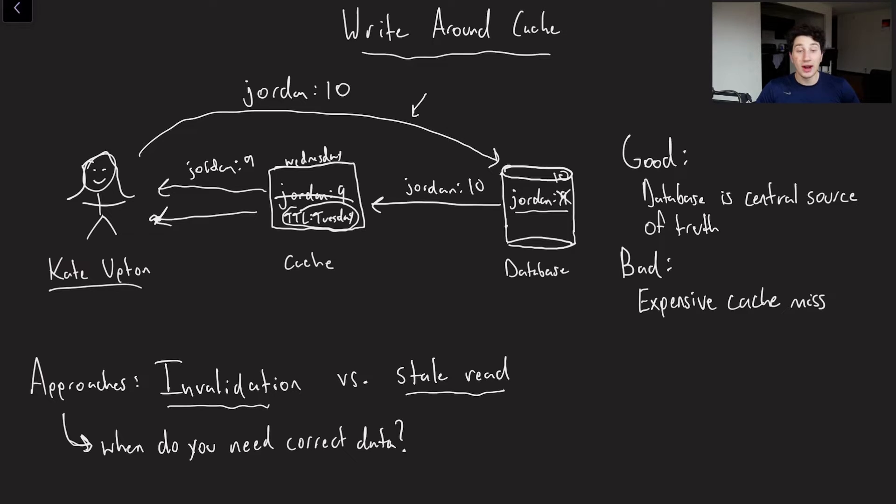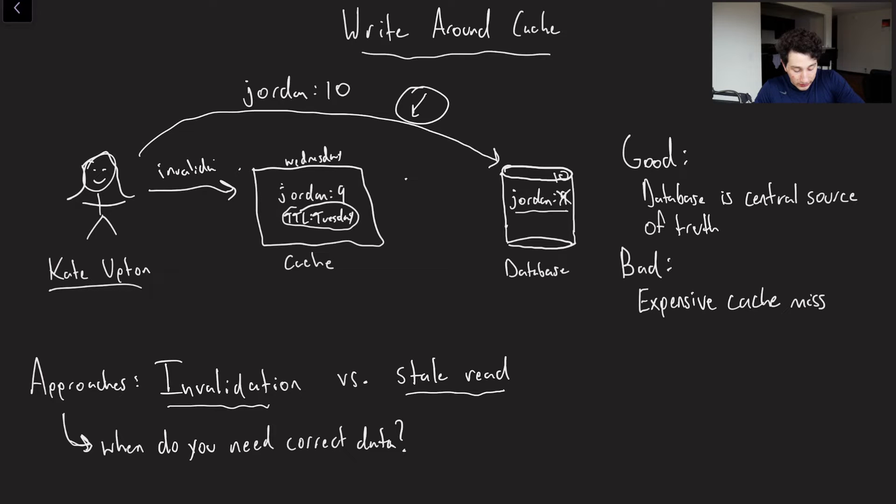Another option is we can take a more active approach to this. So let's go ahead and get rid of this stuff. Oh, no, I have to draw another box. And effectively, now, what Kate Upton would do is the second that she performs this write over here, she's also going to invalidate the Jordan key.